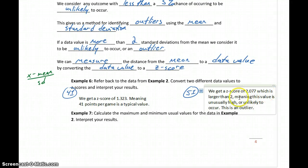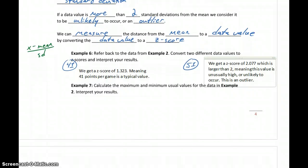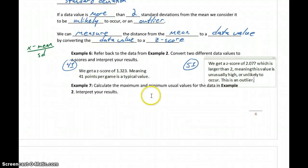Any data value that's more than two standard deviations away — giving a z-score greater than 2 — is going to be unlikely to occur and classified as unusual. So we can take a given data value, calculate its z-score, find out how far it is from the mean, and classify that individual point as either an outlier or a usual, normal value.